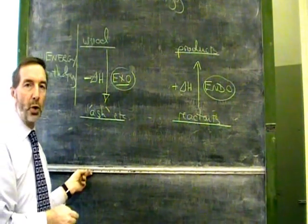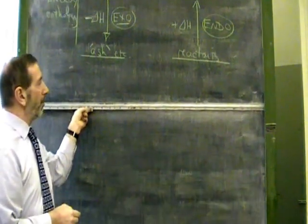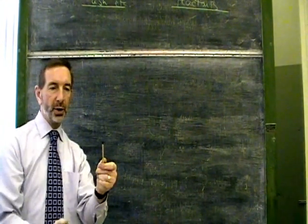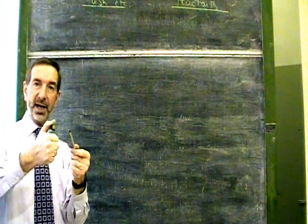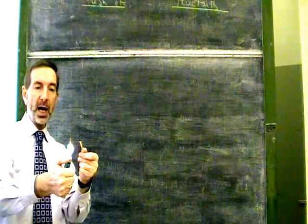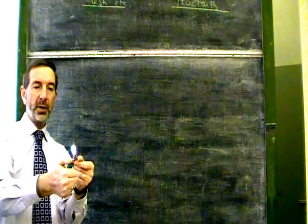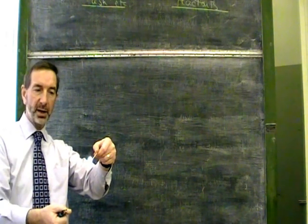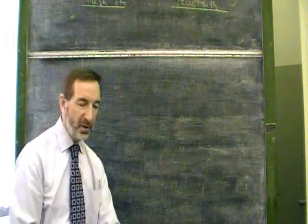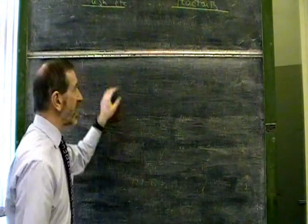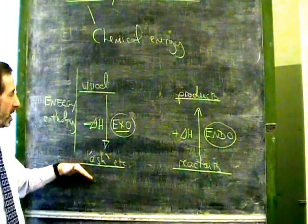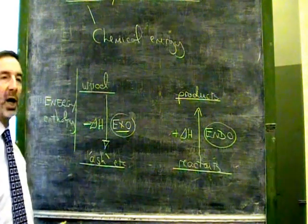However, these diagrams are an oversimplification. Because you could see that in order to get the energy out of the wood, I first of all have to give energy into the wood. I have to supply it with energy, and only when it gets to a certain temperature does it start to catch fire. So we very seldom go straight from reactants to product.